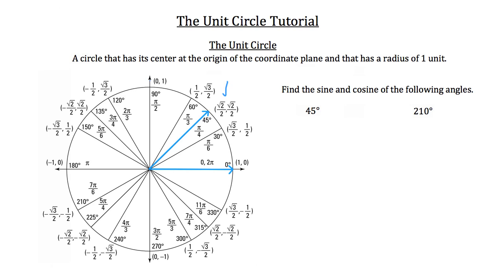This value here is the cosine and this value is the sine — those are the x and y coordinates of the point that lies on the edge of that circle. Now I'm going to show you how to arrive at those exact values without just putting the sine of 45 or the cosine of 45 into your calculator.